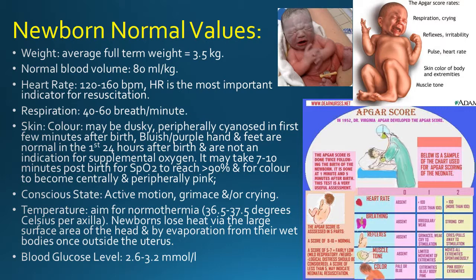Apgar scoring: heart rate absent = 0, breathing absent = 0, reflexes absent = 0, muscle tone absent = 0, colour pale or blue = 0. Heart rate less than 100 = 1, breathing irregular or weak = 1, reflexes — grimace, weak cry to stimulation = 1, muscle tone limited movement of extremities = 1, colour extremities blue/body pink = 1. Heart rate greater than 100 = 2, breathing strong cry = 2, reflexes cries and pulls away to stimulation = 2, muscle tone moves all extremities spontaneously = 2, colour pink = 2.